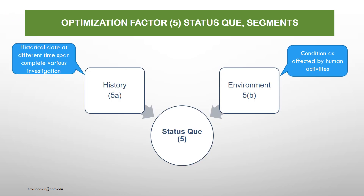Optimization factor — status quo. The first is history and the second is involvement. Historical data at different time spans are used to complete various investigations. Involvement refers to conditions affected by human activities. These two activities form part of the status quo segment.